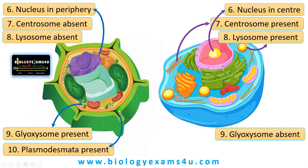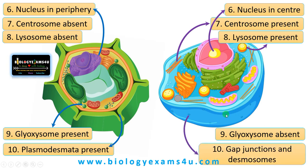Difference number 10: plasmodesmata are present in plant cells. They are fine intercellular connections or cytoplasmic strands that connect adjacent cells, through which molecules can pass between cells. In animal cells, in place of plasmodesmata, there are gap junctions and desmosomes. Gap junctions are fine intercellular channels that allow regulated passage of molecules between cells, whereas desmosomes are intercellular junctions providing strong adhesion between adjacent cells.